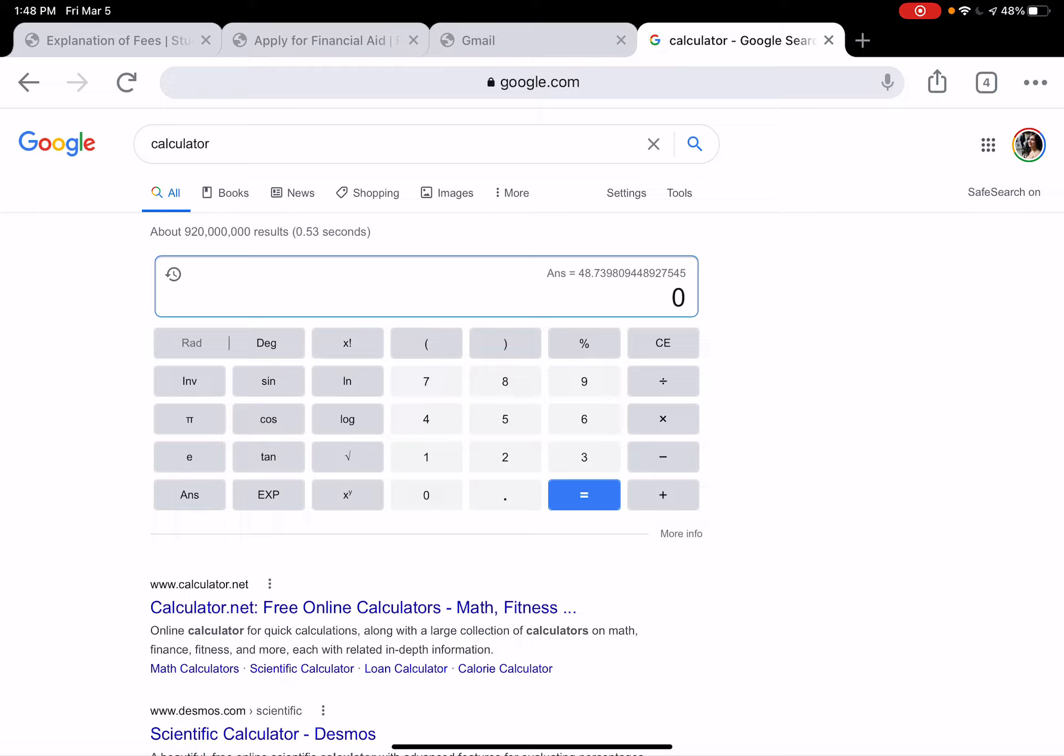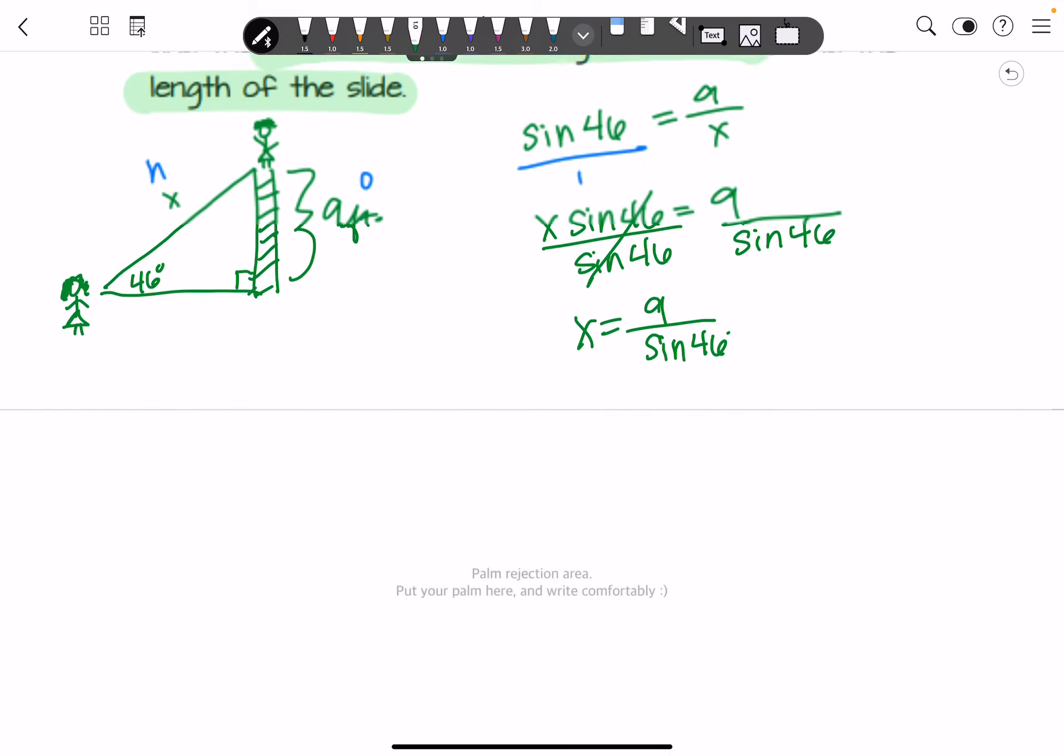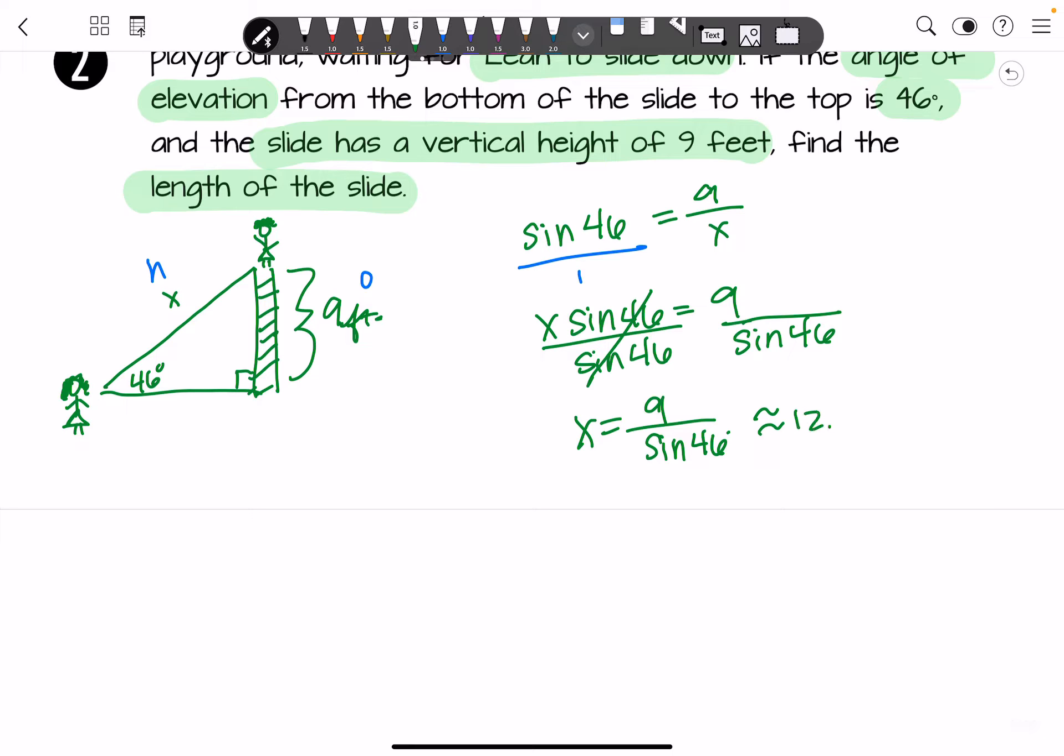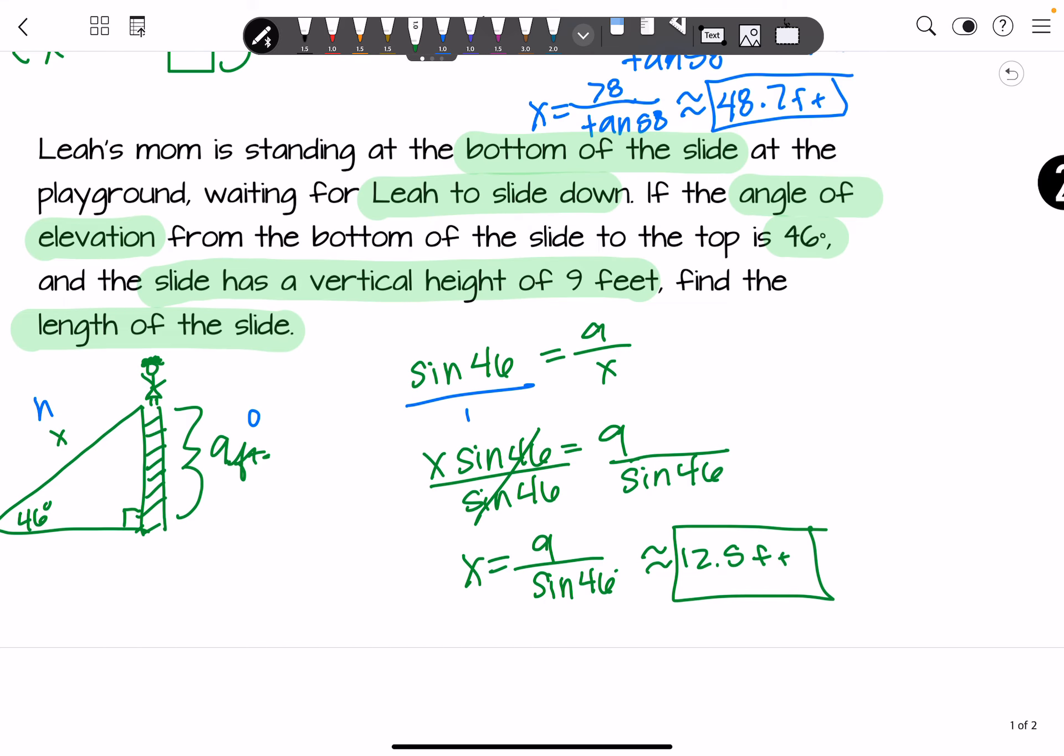So let's drop it into our calculator. Make sure you're in degrees. Luckily, I am. And I'm going to do 9 divided by sine 46. And if you're not on your TI-84, using your Apple, Android, whatever you're using, you can do x divided by parentheses sine, put in the degree. And you don't have to close the parentheses in this case and it'll still give you the answer. So you get about 12.5 feet.